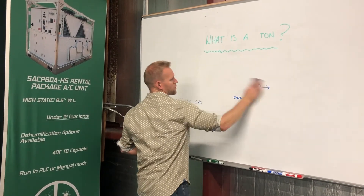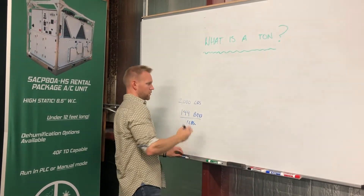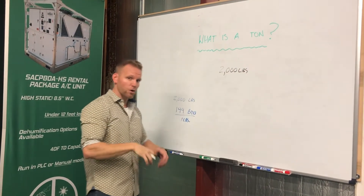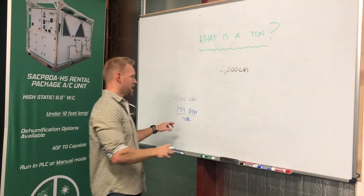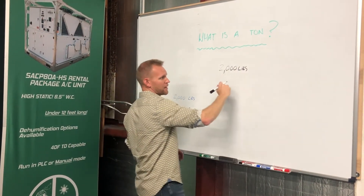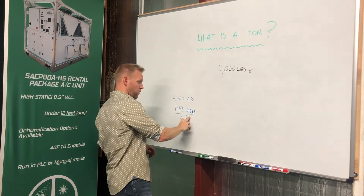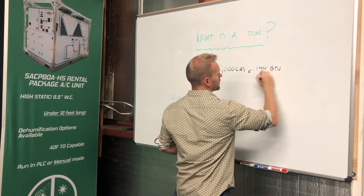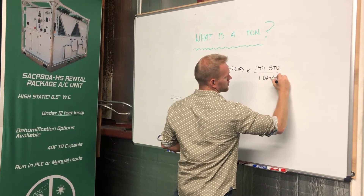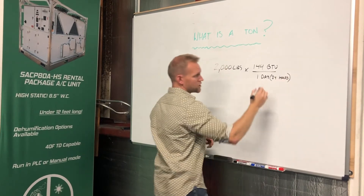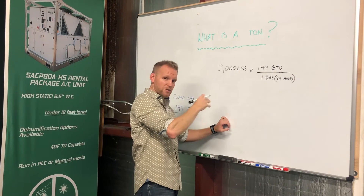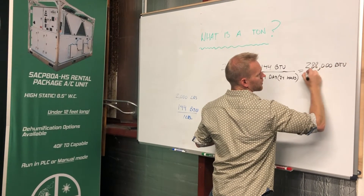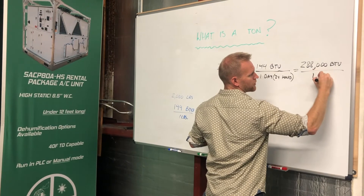So how do we come to the ton as we know it today? Let's walk through the process. The term comes from the energy required to melt 2,000 pounds of water over a one-day period — that's the standard. We know we have 2,000 pounds of ice and the energy required to melt one pound of ice is 144 British thermal units. So we multiply 2,000 by 144 to get the total energy required to melt one ton of ice in one day, which equals 288,000 British thermal units per day.